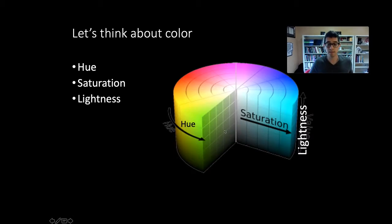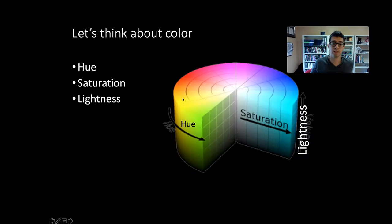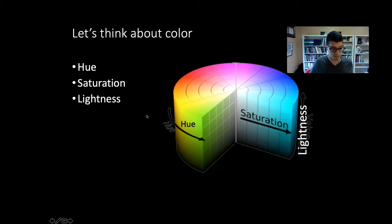There's another visualization of this in the textbook for this week's reading. As you go up it goes from darker to lighter; as you go from the center outward it goes from the absence of color to a much more saturated and vibrant color; and as you spin around the wheel you get different hues—going from blue to purple to red to yellow to green.